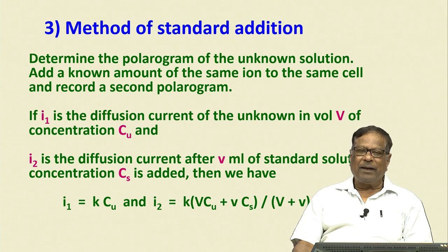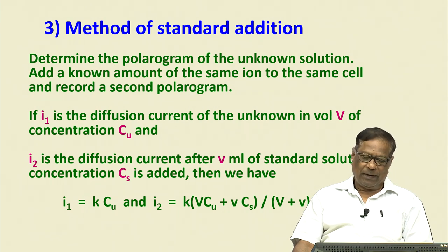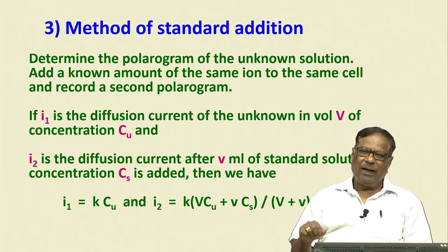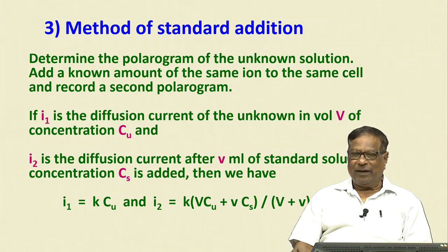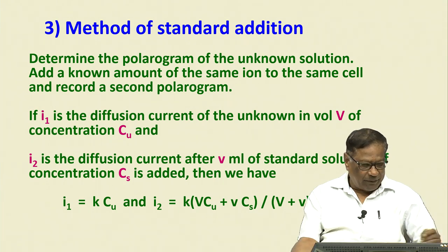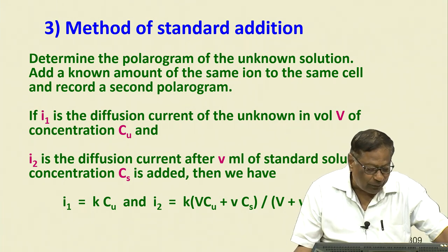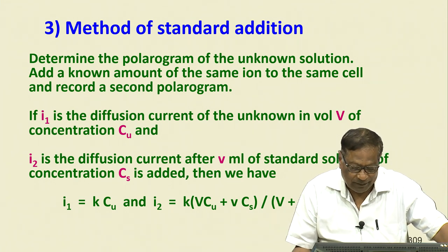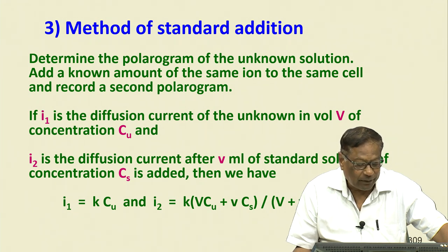I₂ = k × (V × C_u + v × C_s) / (V + v), accounting for the dilution factor. This means the actual concentration in the mixture is not the same as taken alone, but as a mixture. So I write: I₂ = k × (V·C_u + v·C_s) / (V + v).